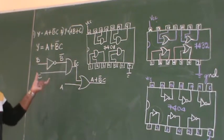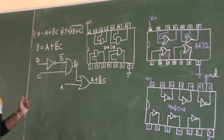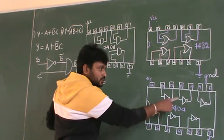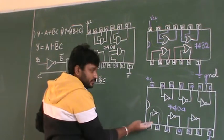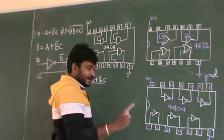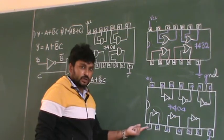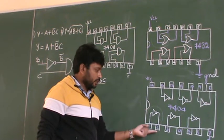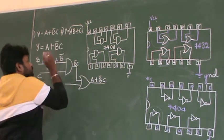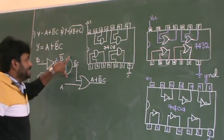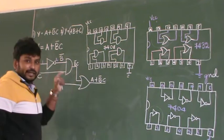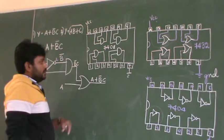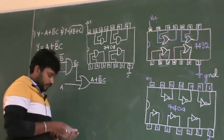Now the very important thing is how to write the pin numbers for this diagram. For the first AND gate — you can assume any of the AND gates, but usually it starts from the first AND gate. There is only one AND gate here. The inputs for the first AND gate are pin 1 and pin 2. The output for the first AND gate is pin 3.